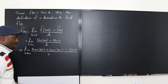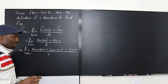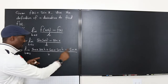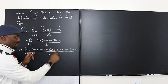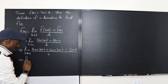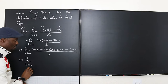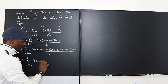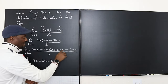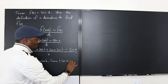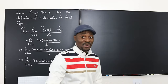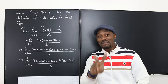Now I can bring the sine x terms together. This is similar to that, so I can group them. This is the same thing as the limit as h goes to 0 of (sine x cosine h minus sine x) plus cosine x sine h, all over h. It's getting clearer — I can see two things I can use here.